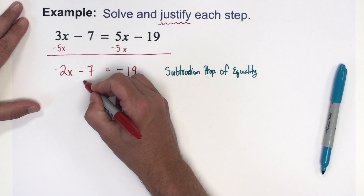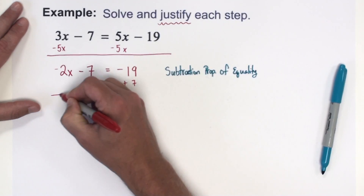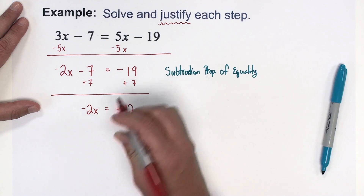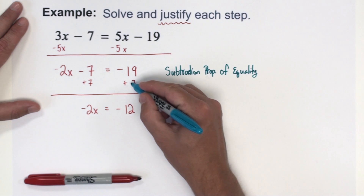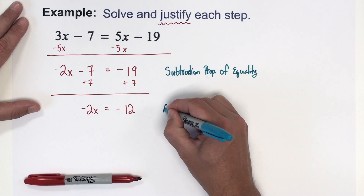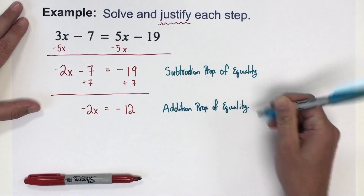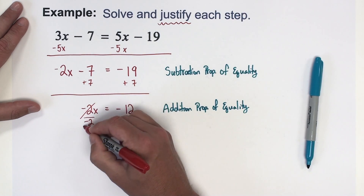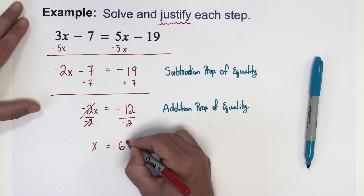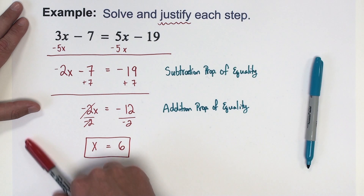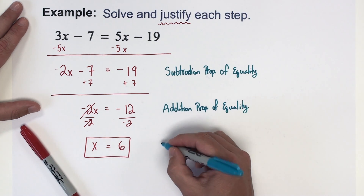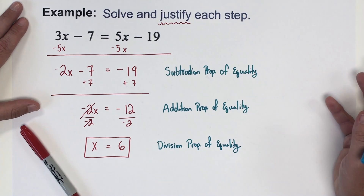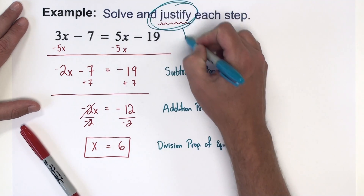Next I would add 7 to both sides, giving me negative 2x equals negative 12. What I did to get that step is addition property of equality. Then finally to finish the problem I divide both sides by negative 2, crossing that out, giving me x equals 6. The justification for that last step is division property of equality. That's the finish of this problem — solving and justifying all of the steps along the way.